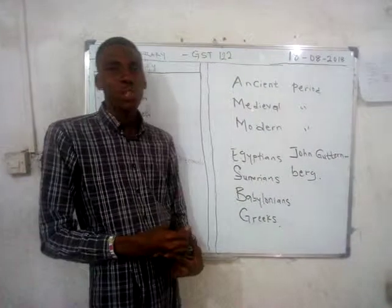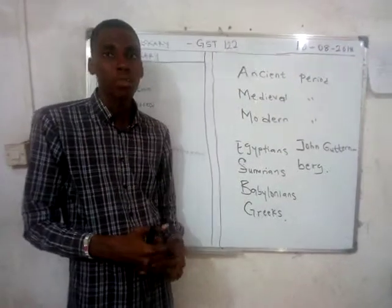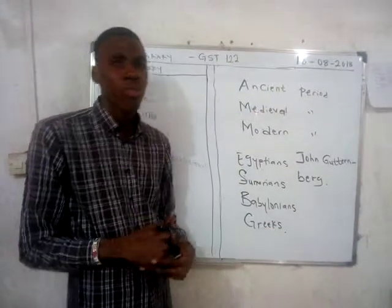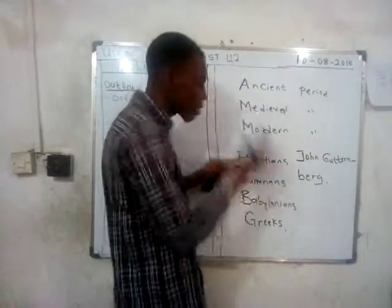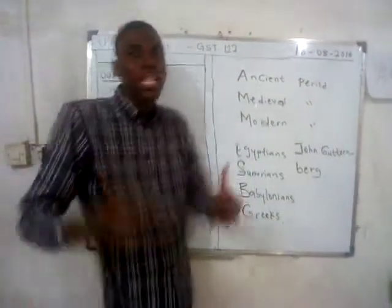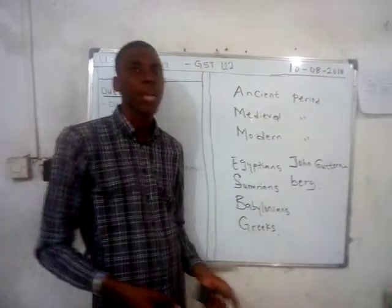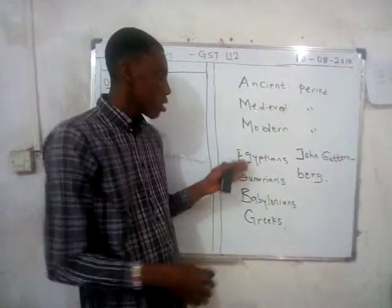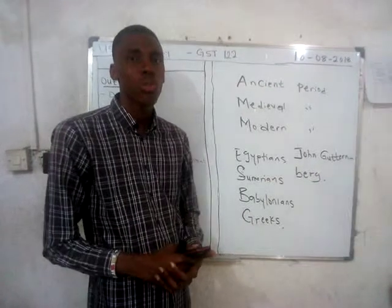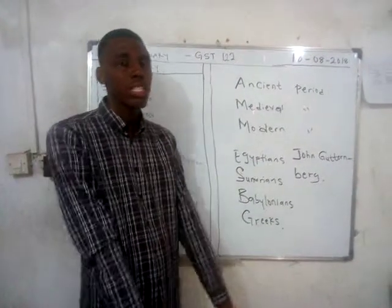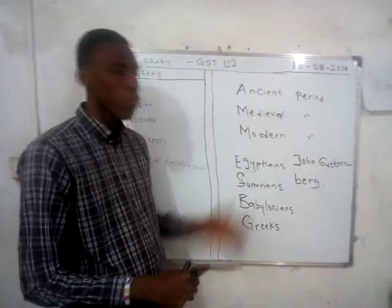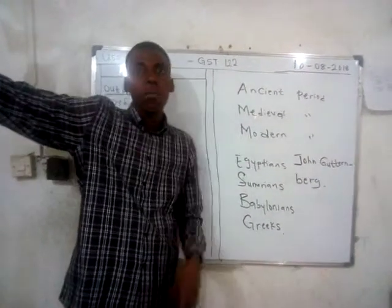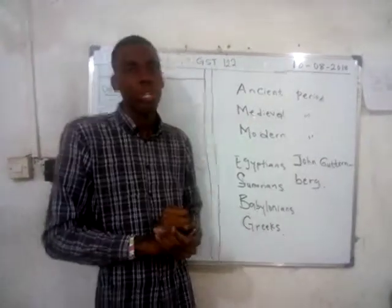Around 1932, Carnegie's Corporation of the United Kingdom funded that particular library with about 6,400 pounds, giving the library enough money to purchase more books. Then in 1948, the University College of Ibadan was formed, and some of those books from the Lagos Readers Club were transferred to the University College of Ibadan.